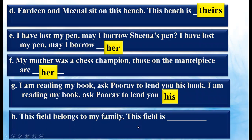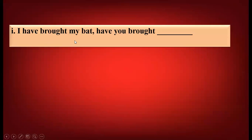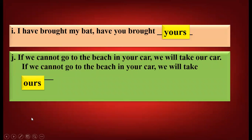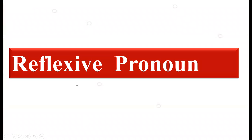This field belongs to my family. This field is dash. Here 'my' is written, so we'll write 'ours' over there. Next, we have to use a possessive pronoun for 'you', so we'll write 'yours'. If we cannot go to the beach in your car, we will take dash — we have to use a possessive pronoun for 'we', so we'll write 'ours'.